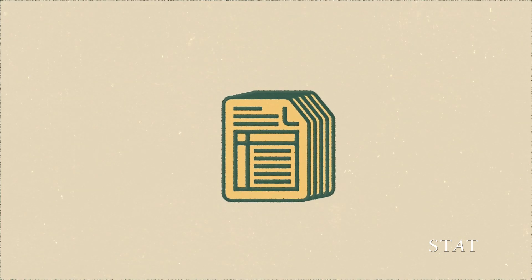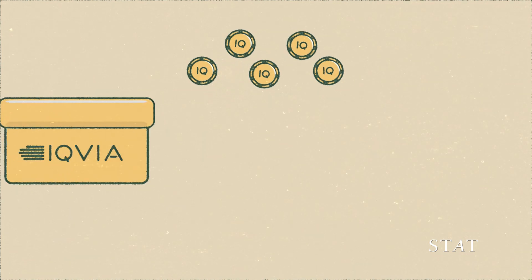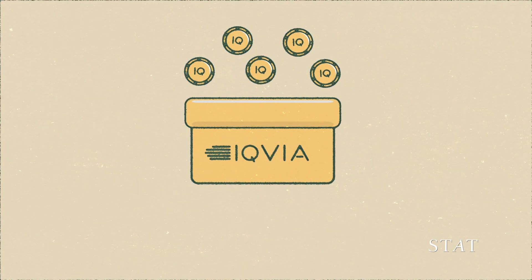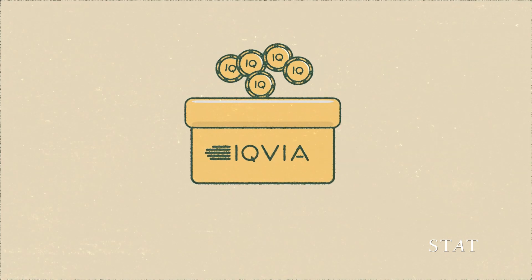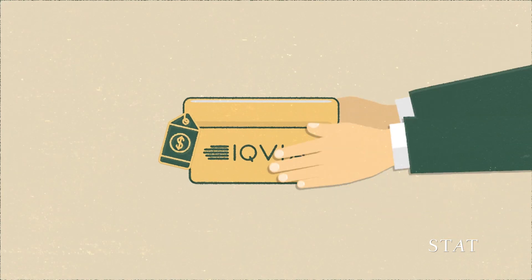IQVIA uses unique identifiers known as tokens to de-identify the information. It then sells it to other businesses that may use it to target digital advertising.